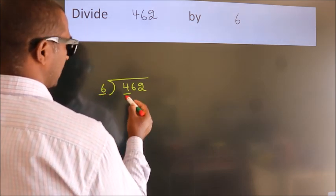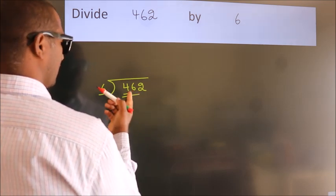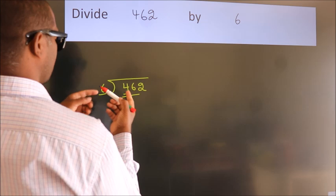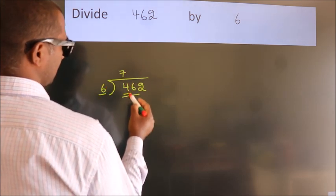So we should take two numbers. 46. A number close to 46 in 6 table is 6 times 7 equals 42.